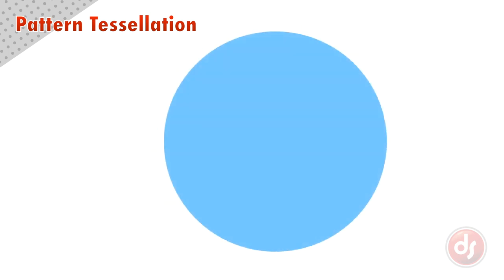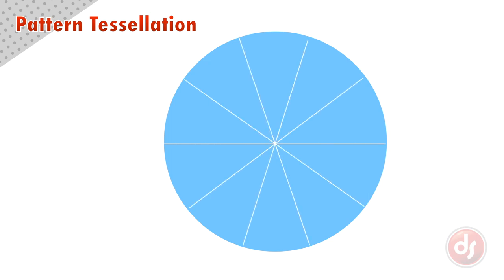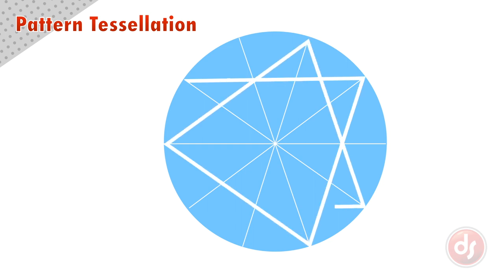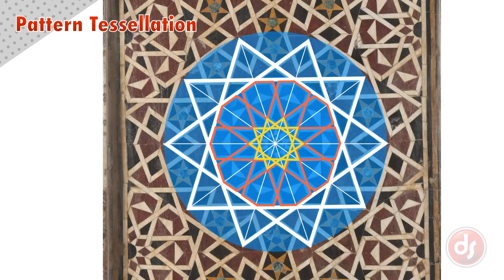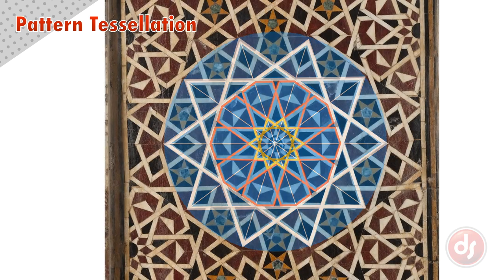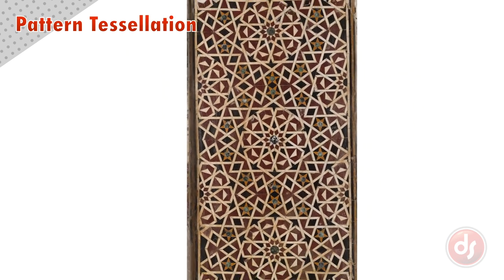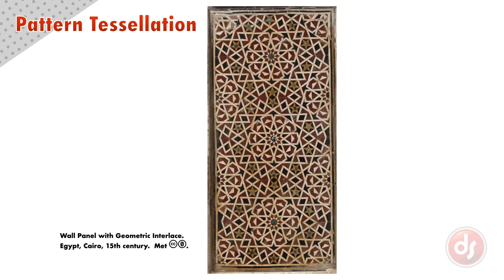Many patterns are built on geometric tessellations. A tessellation starts with a simple geometric shape like a square, hexagon, circle, etc., that is then divided using geometric divisions. These divisions can be divided and subdivided to create complex patterns within the geometric shape. The design that is created is called a tile and is then used to build an even more complex pattern. The tile is tessellated, or repeated, by interlocking many of the tiles together.